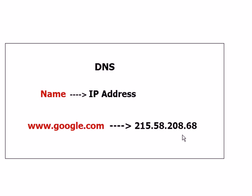For large corporate networks running their own DNS service, the ability to update DNS records as the IP address changes — which is dynamic DNS — has been available since certainly 2003 and maybe even as early as 2000. On those networks, the client computer boots up, goes to DHCP to get an IP address, and then goes to the DNS server to update it with the new IP address. That's what we call dynamic DNS, and it has been available for quite a long time.